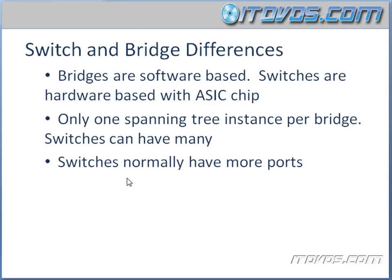Remember, switches and bridges are effectively the same thing. Here are some of the key differences: bridges are software-based, while switches are hardware-based with an ASIC chip. There is only one spanning tree instance per bridge, whereas switches can have many. Spanning tree has to do with loop avoidance, and we'll get in depth into spanning tree later on. Finally, switches normally have more ports than bridges — and that's actually why we use switches.